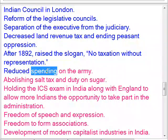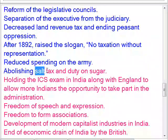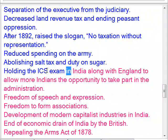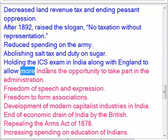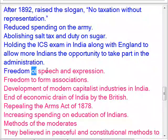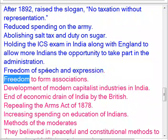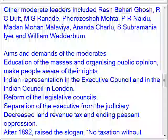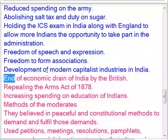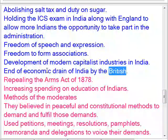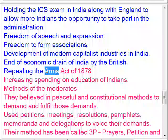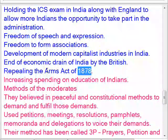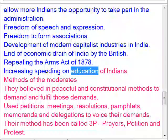Further demands included reduced spending on the army, abolishing salt tax and duty on sugar, holding the ICS exam in India along with England to allow more Indians the opportunity to participate in administration, freedom of speech and expression, freedom to form associations, development of modern capitalist industries in India, end of economic drain of India by the British, repealing the Arms Act of 1878, and increasing spending on education of Indians.